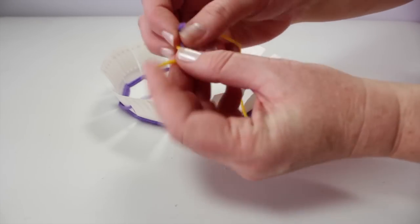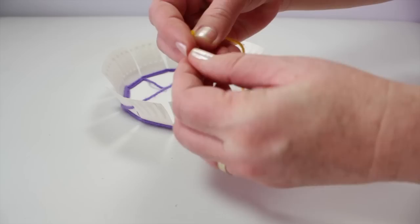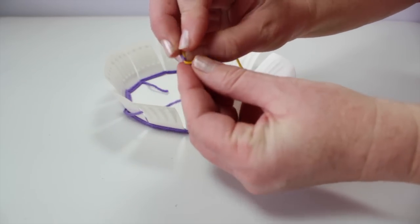When you need to change the yarn color, tie the ends together, making sure the knot is on the inside of the plate, and continue weaving.